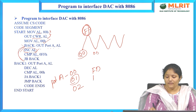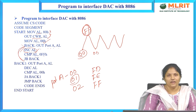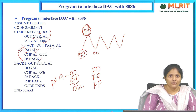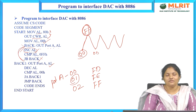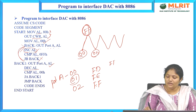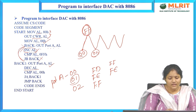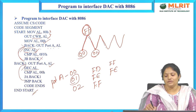Once the value reaches FF, the comparison between FF and FF is equal, so the 'jump if below' condition is not satisfied and execution moves to the next instruction. From FF onwards, the wave needs to gradually decrease back to 00. A decrement operation is used: AL is decremented from FF to FE, and a 'jump if above' instruction loops back until the value reaches 00. Once the value equals 00, the loop ends and the code repeats, producing a continuous triangular wave.